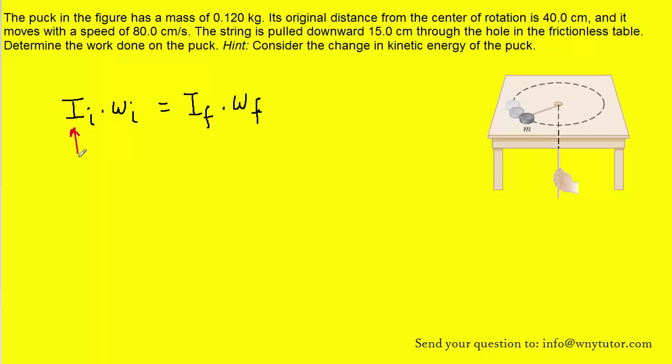Now it turns out that the moment of inertia for an object like a puck is mass times its radius squared. That usually applies if the object is a particle. And it's safe to assume that because the puck is so small, it essentially acts as a particle.